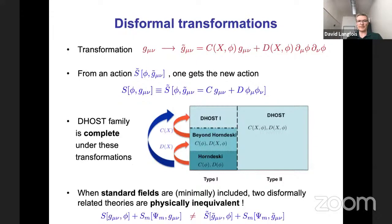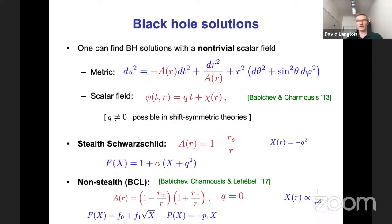The DHOST family has the full space of theories. Another important point: these two disformally-related actions are equivalent in vacuum, but as soon as you include matter — if you consider two theories which are disformally related and in each case consider matter minimally coupled to their respective metrics — then the two theories are physically inequivalent, simply because you couple matter minimally to a different metric.